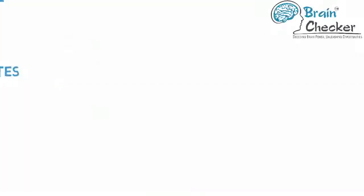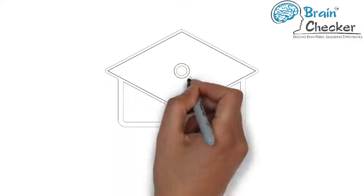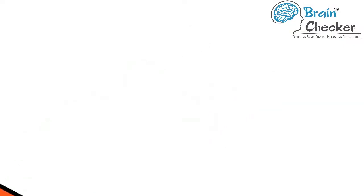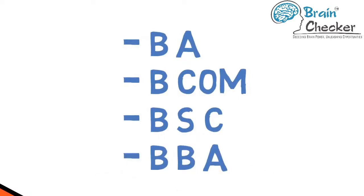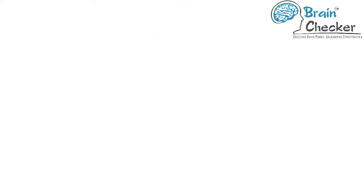Now let's go to eligibility and professional courses. 10 plus 2 in arts, science or commerce is mandatory with at least 60% marks. Student has to be a graduate in any stream, for example, BA, BCOM, BSC or BBA, to be considered for a master's program, with at least 60% marks.